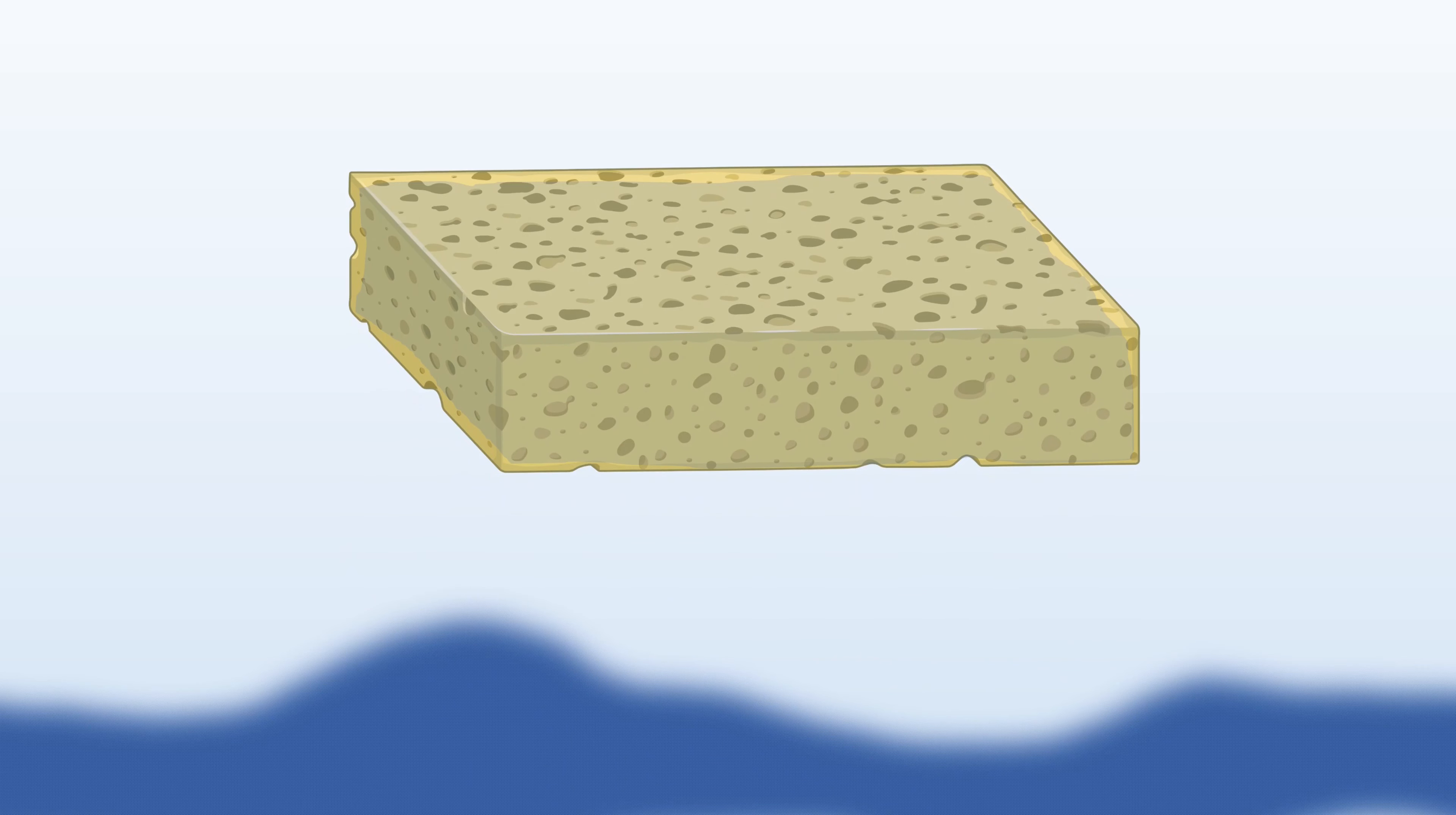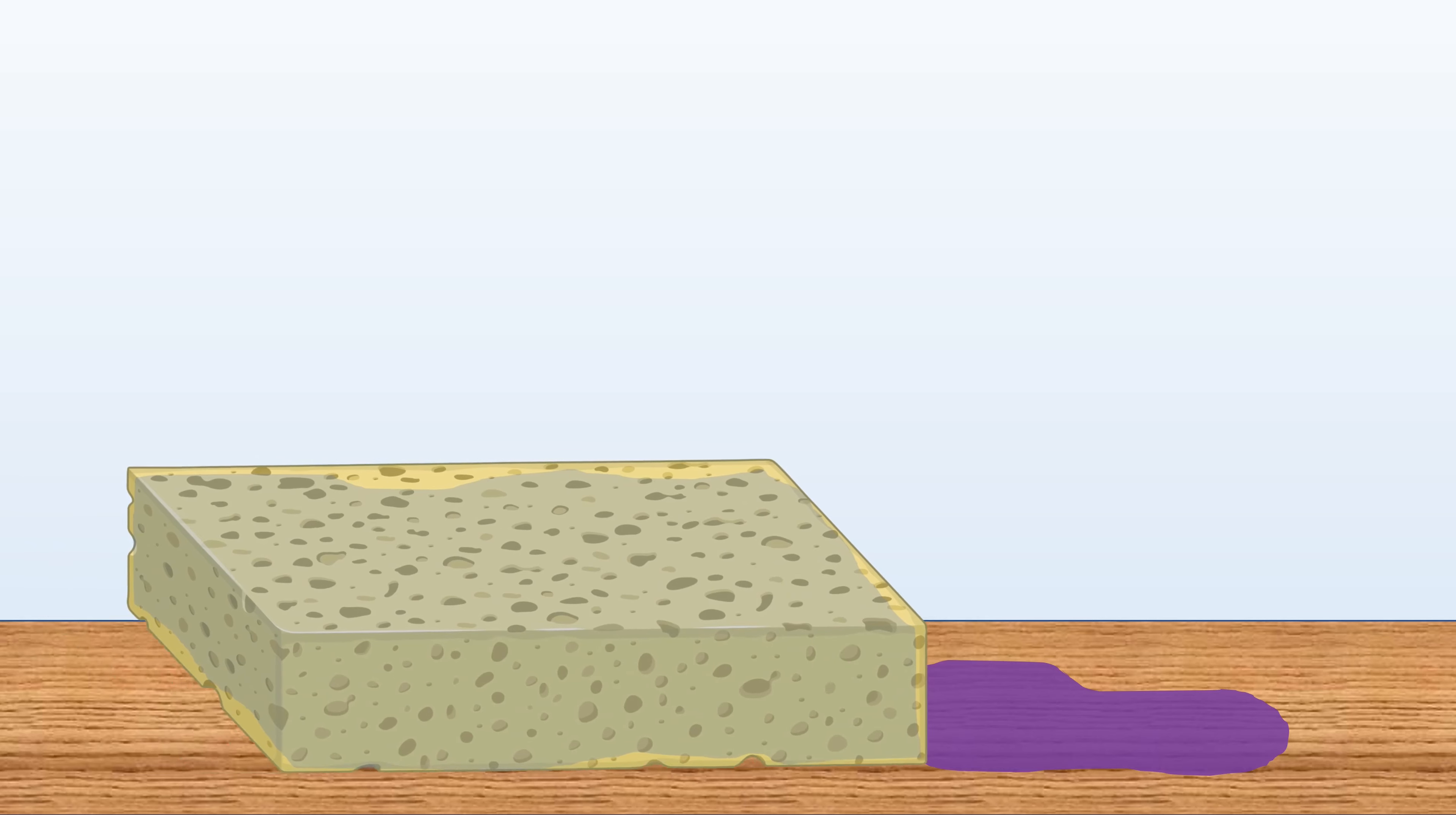Then, you take the sponge to wherever you need it to be. When you're ready, you can squish to release the water and clean a specific spot.